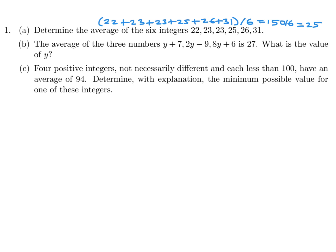The average of three numbers, y plus 7, 2y minus 9, 8y plus 6 is 27. What is the value of y? y plus 7 plus 2y minus 9 plus 8y plus 6, and there's three numbers. Divide by 3, and they're saying that is 27. So there's the equation. When you collect like terms, this is 11y plus 4 equals 81. And when you solve for y, you will get y equal to 7.